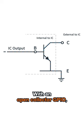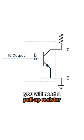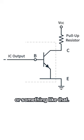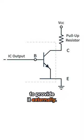With an open collector GPIO, if you want a high voltage in the high impedance state, you'll need a pull-up resistor or something like that. Sometimes this is provided internally, sometimes it's not, and you need to provide it externally.